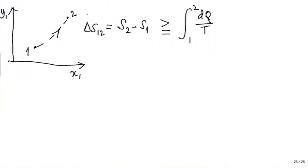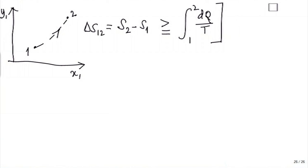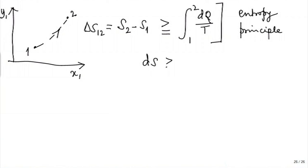This is known as the entropy principle. In differential form it will be: dS ≥ dq/T.